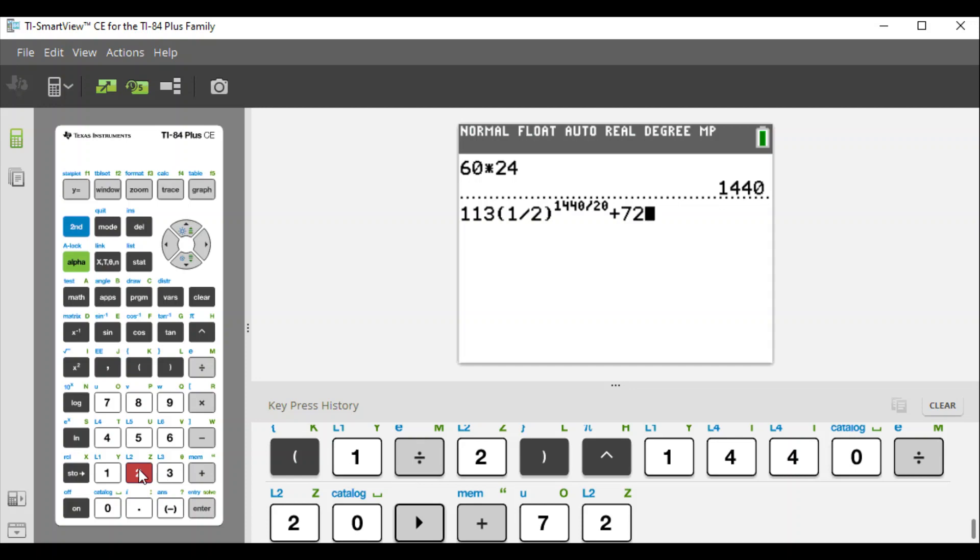We're plugging in the number of minutes for a day, which is 1440, into our function and we get 72 degrees. That's strange. I believe the calculator is trying to round things off, so we're going to take this equation and delete the plus 72 to see what we get.